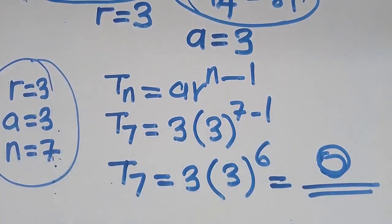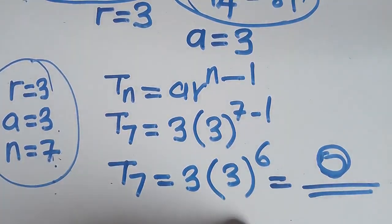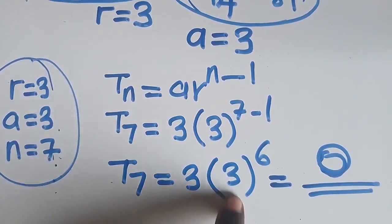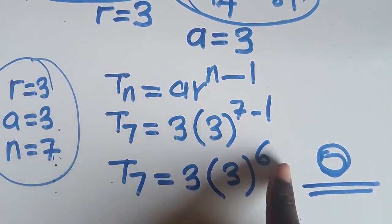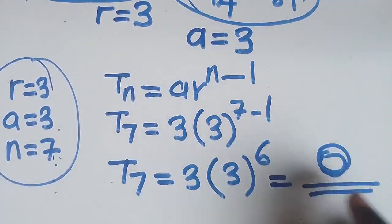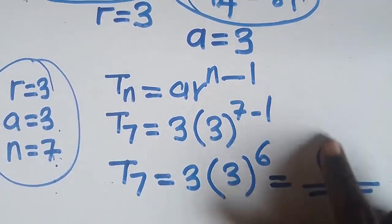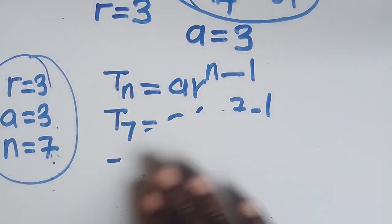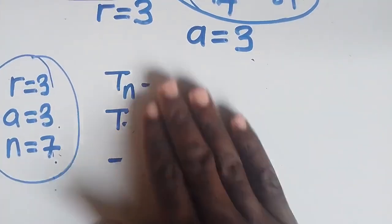Press 3, open bracket, 3 to the power 6, then write the answer. That's how we work out T7. Then we move to the next question.